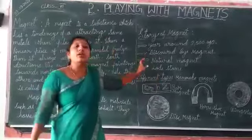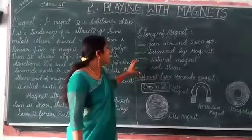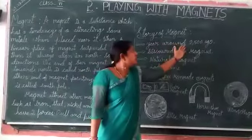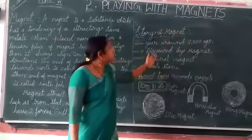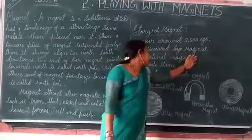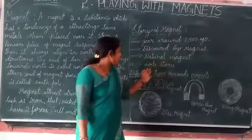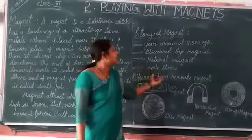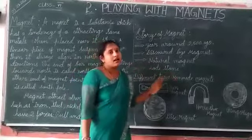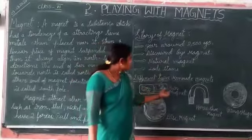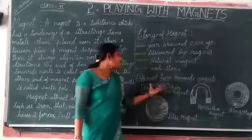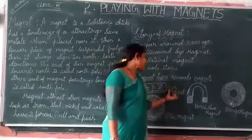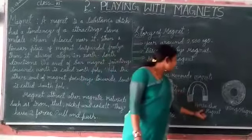So this is the story of the magnet, children. The magnet was discovered around 2500 years ago, discovered by Magnes. He discovered the natural magnet called lodestone. With the help of lodestone, magnets are now made in four different types. The first one is the bar magnet — it shows the north and south poles and is a common type of magnet. The next one is the horseshoe magnet. It looks like a horseshoe and also shows the north pole and south pole.